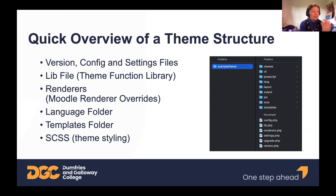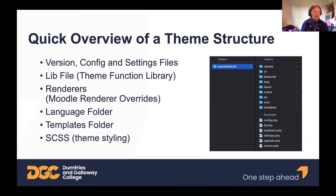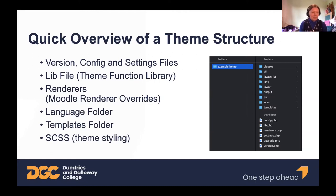There's a lib file — a library of functions the theme uses — which can include references to stored files from theme settings or theme renderer overrides. Theme renderers are PHP classes that determine the output; overrides can be used to override the default core renderers to produce a different output. I try to use renderer overrides sparingly because they can be more involved to keep updated as Moodle gets updated. There's also a language folder where all your theme language strings are stored, and you can create separate versions for different translations like Italian, French, or Spanish.